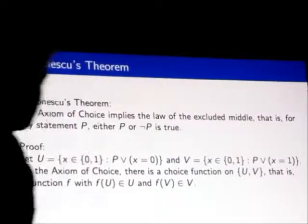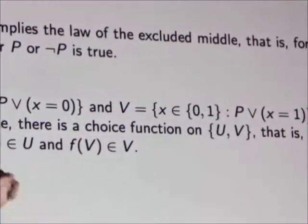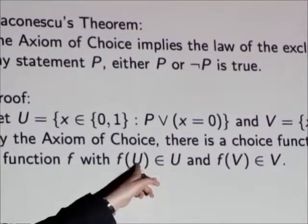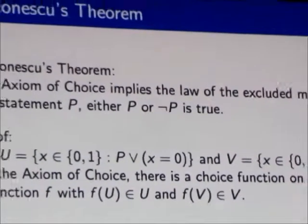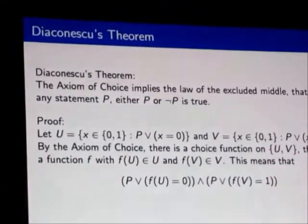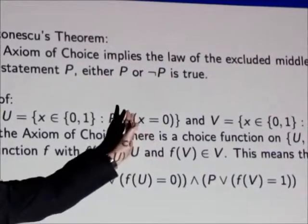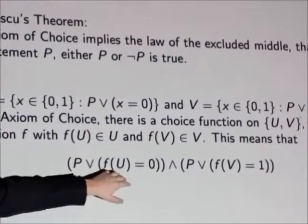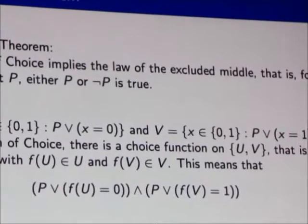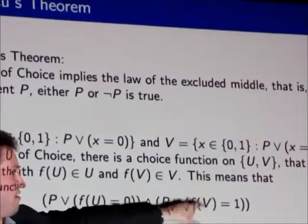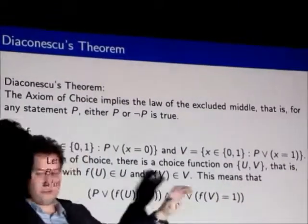Then I take a choice function on the set {U,V}. I'm taking a function defined on this two-element set, U and V. The value of f at U is inside of U—it's going to be either 0 or 1. And the value at V is inside of V, so it's also going to be 0 or 1. By the definition of these sets, I know that either P is true or f(U) must be 0, because if P is false, then x has to be 0. So either P or f(U) equals 0. And the same thing happens on the right side. This wedge is my logical and. It's saying either P is true or the value of f at V has to be 1, because of how V is defined.